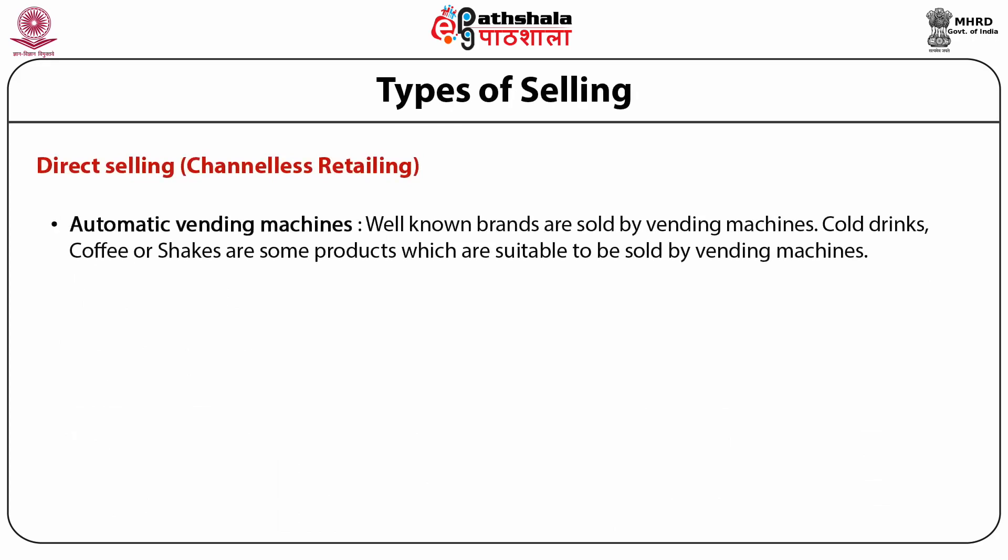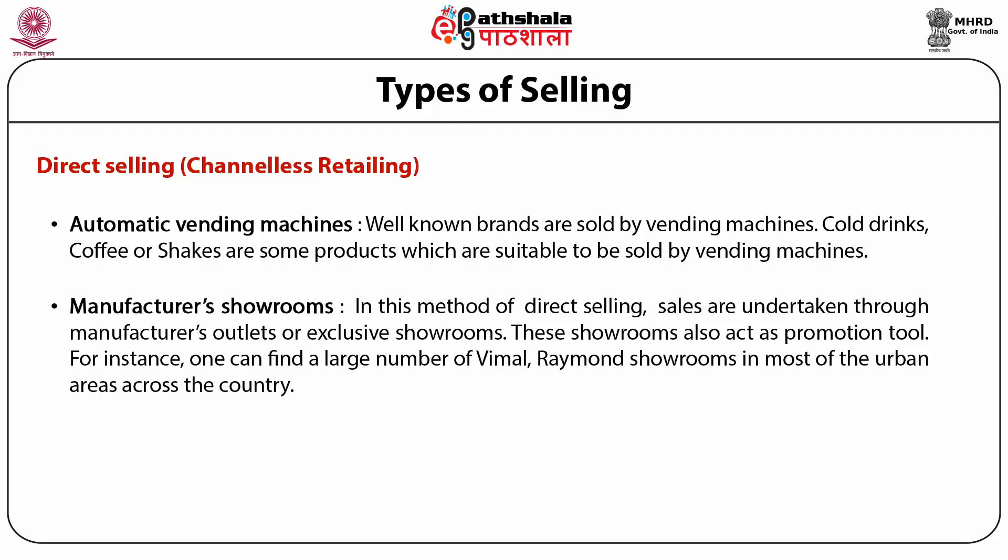Free home delivery is provided to customers, making it a convenient and cheaper shopping method. In-store sale is facilitated through tele-marketing, and it also reduces in-home selling cost as a salesperson is not required to convince the prospect. Automatic vending machines sell well-known brands — cauldrons, coffee, or shakes are some products suitable for vending machines. In manufacturer's showrooms, sales are undertaken through manufacturer's outlets or exclusive showrooms. In India, the textile industry makes extensive use of showrooms, which also act as promotion tools. One can find a large number of women's showrooms in most urban areas across the country.